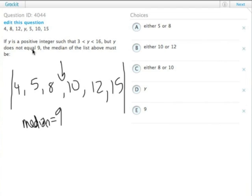With y in it, but y does not equal 9, so y is not the same as the median. So no matter what y is, y could be the same as one of these other numbers in the list.